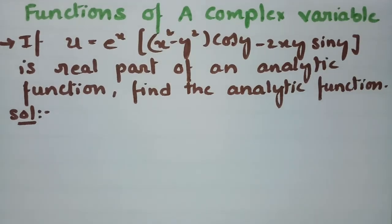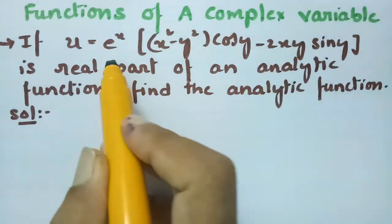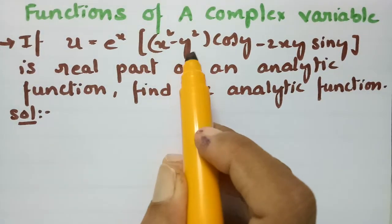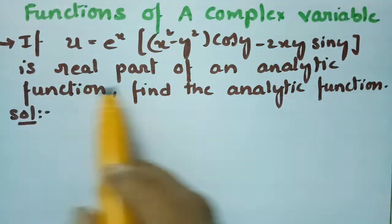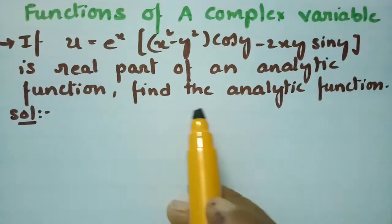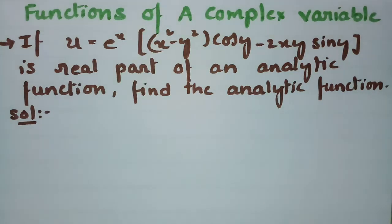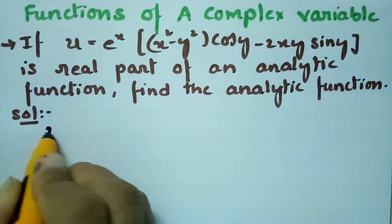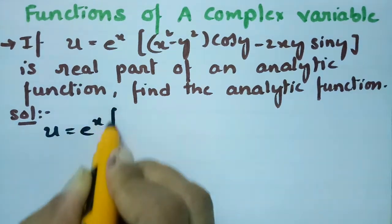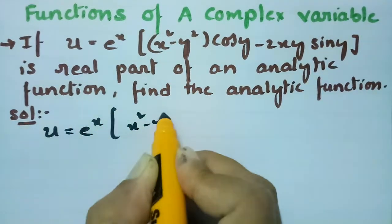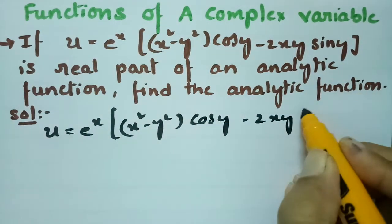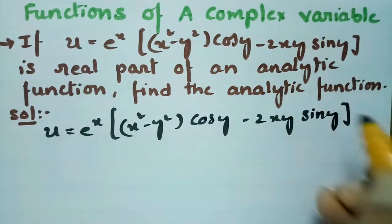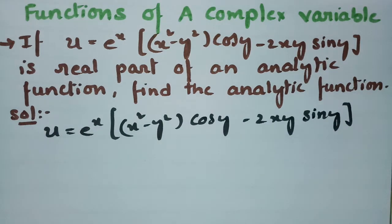Today's video I am going to solve a problem from functions of complex variables. The real part u is given as e^x times (x² − y²)·cos y minus 2xy·sin y. This is the real part of an analytic function, and we have to find the analytic function. I will use Milne's Thompson method.